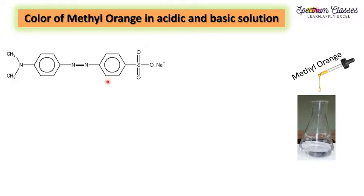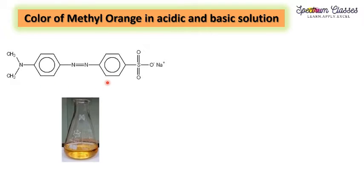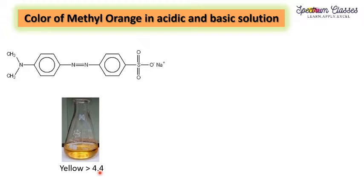Here is the methyl orange formula, and this structure is present in the basic range. This yellow color is due to this chemical formula, and it is present at a pH greater than 4.4. So in the basic medium we have this yellow color.